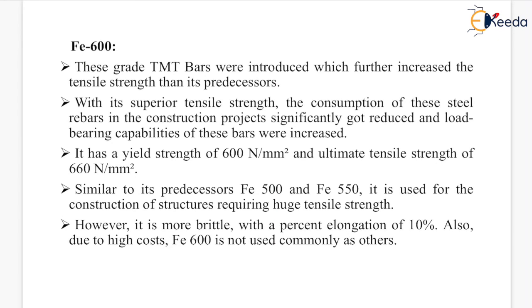FE600 TMT bars further increased tensile strength beyond its predecessors. With superior tensile strength, consumption of steel rebars in construction was significantly reduced and load-bearing capabilities increased. FE600 has a yield strength of 600 N/mm² and an ultimate tensile strength of 660 N/mm². Like FE500 and FE550, it is used for structures requiring huge tensile strength. However, it is more brittle with a percent elongation of 10%, and due to high cost, FE600 is not used as commonly as others.